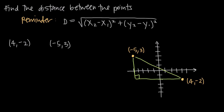In this video, we're going to talk about how to use the distance formula to find the distance between two coordinate points. As a reminder, I've written the distance formula here, and it's d equals — where d is the distance we want to solve for — the square root of (x sub 2 minus x sub 1) that quantity squared, plus (y sub 2 minus y sub 1) that quantity squared.